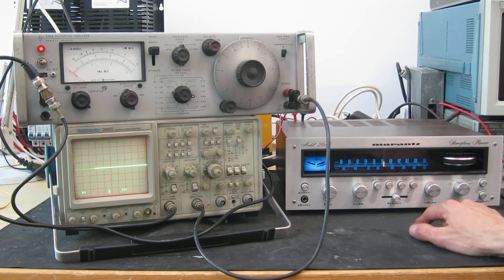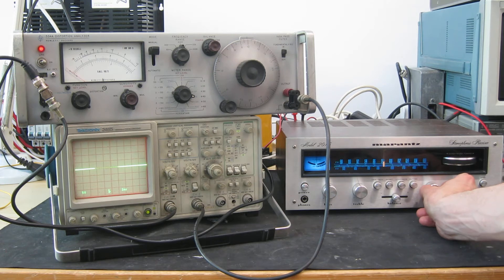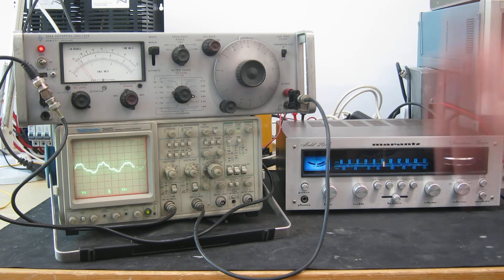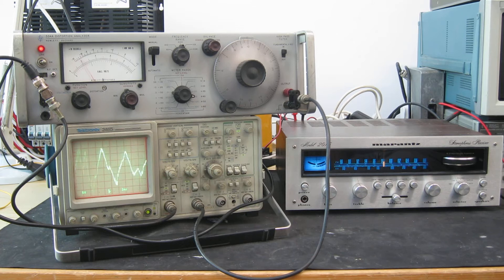Now first of all here's the receiver in action. I've just got a simple radio aerial hooked up to it. If I turn the volume up you should be able to see on the scope there we have audio there. I think it's a talk radio station and you can see the voltmeter on the distortion analyzer bouncing around in sympathy.